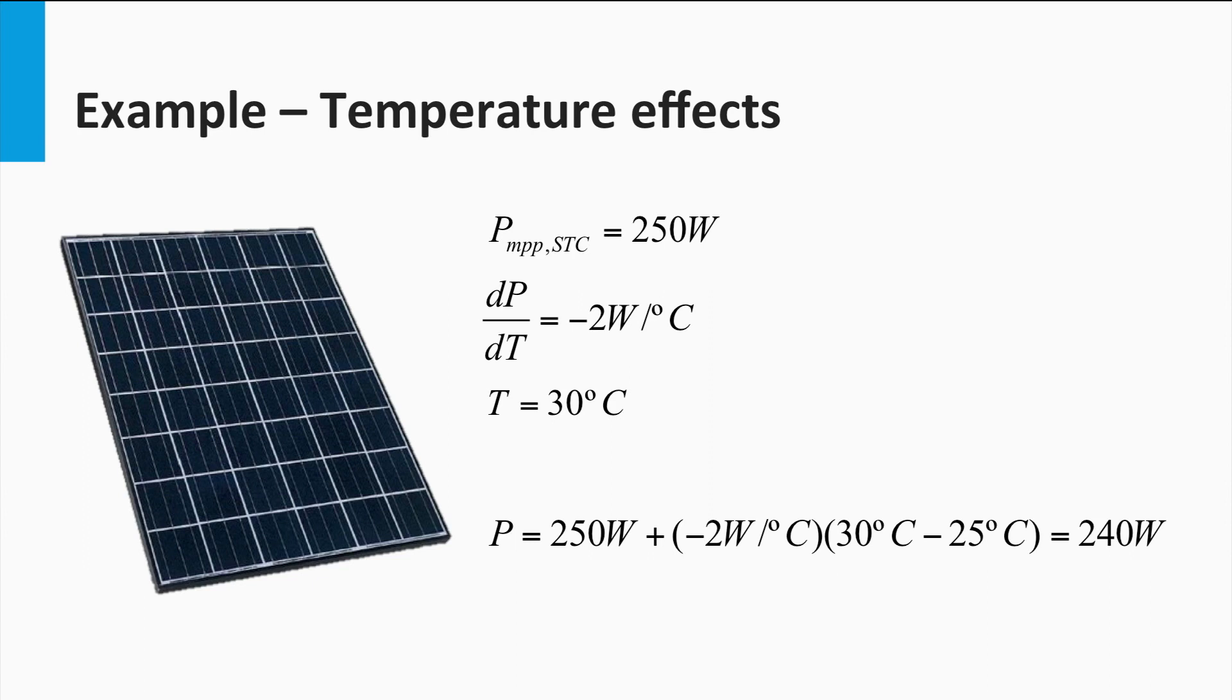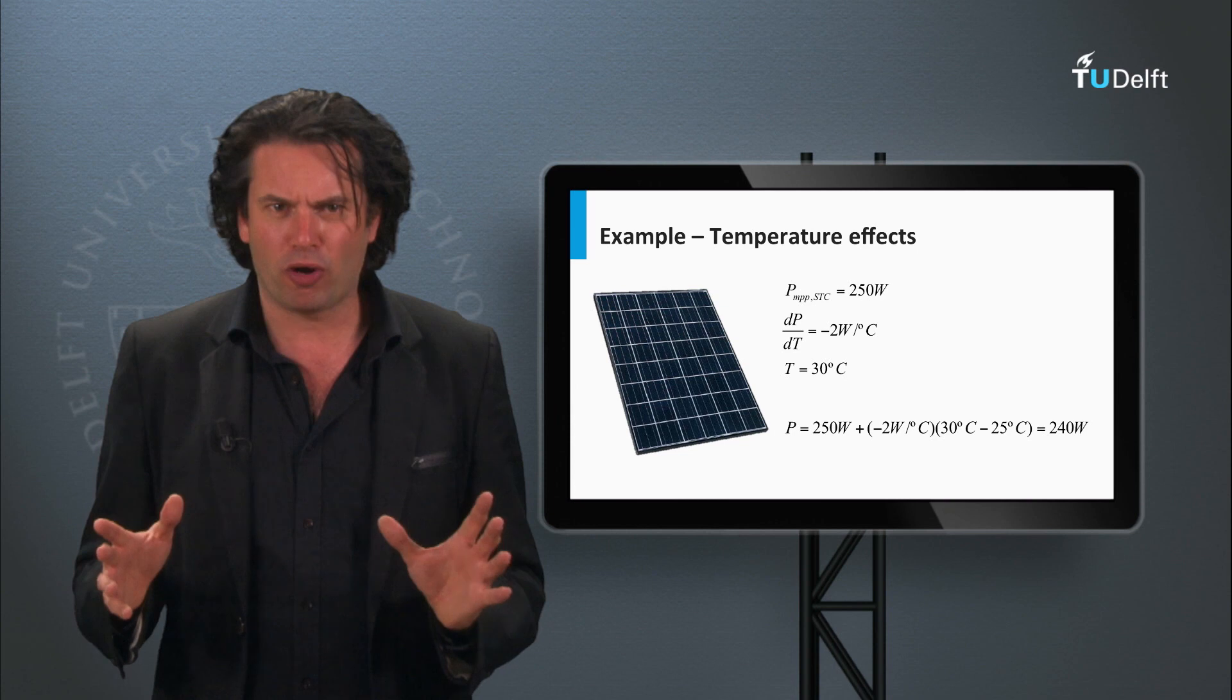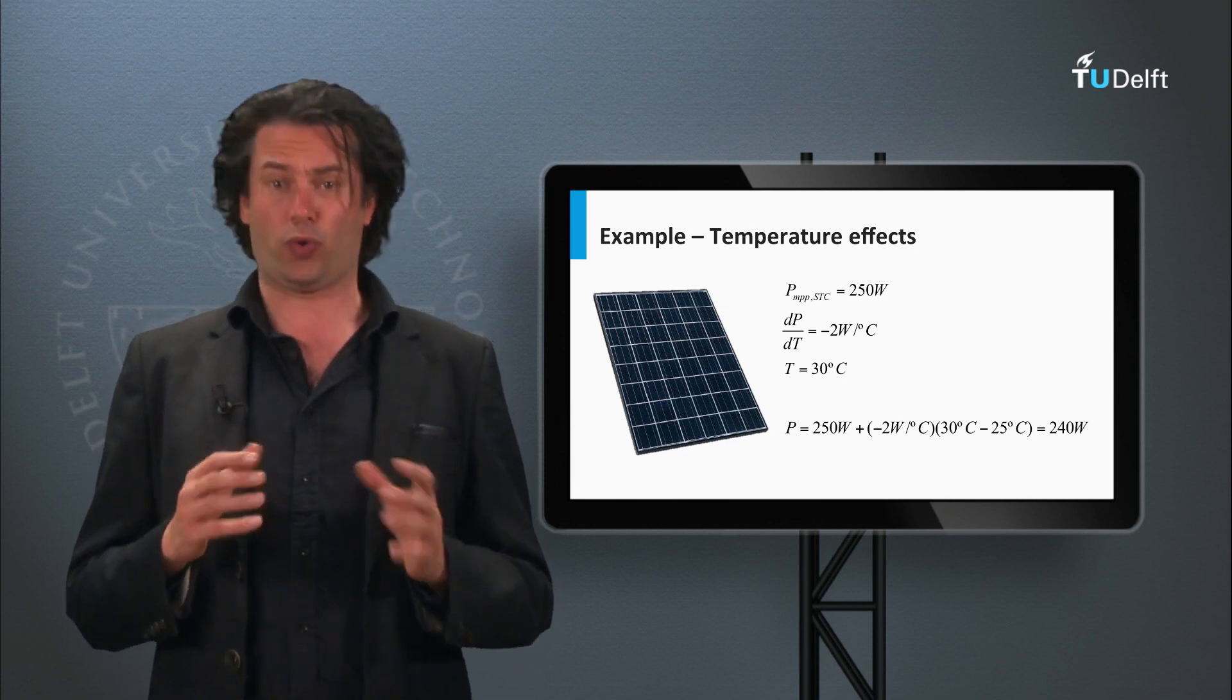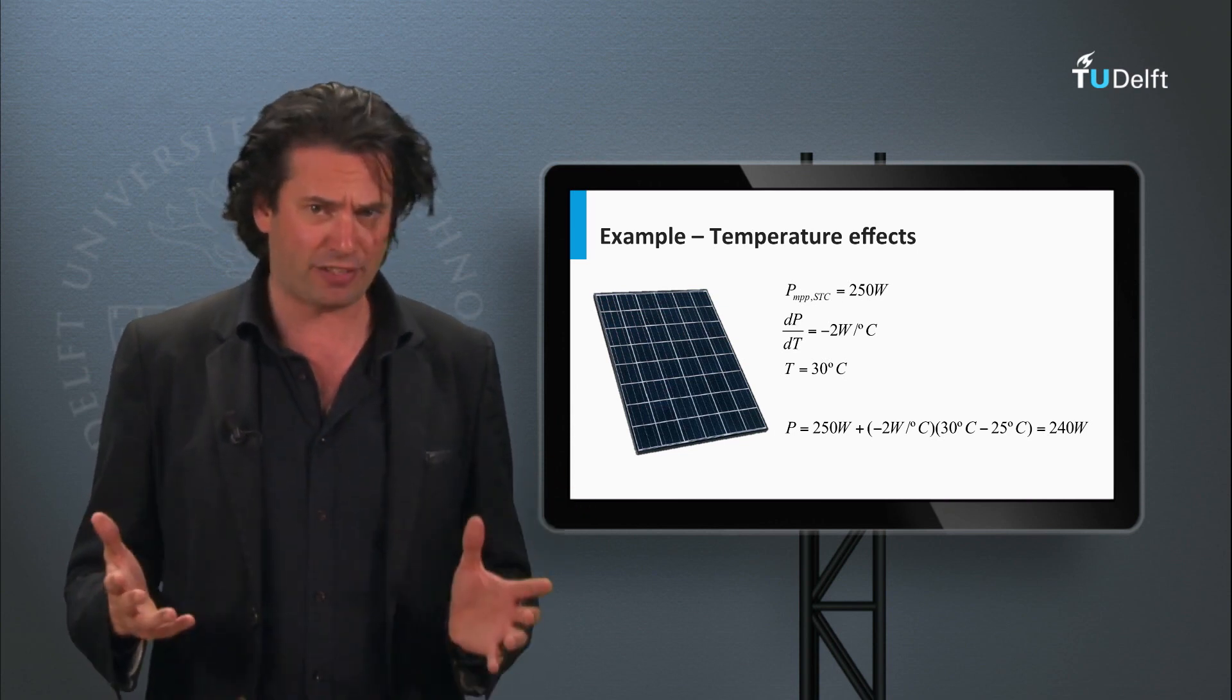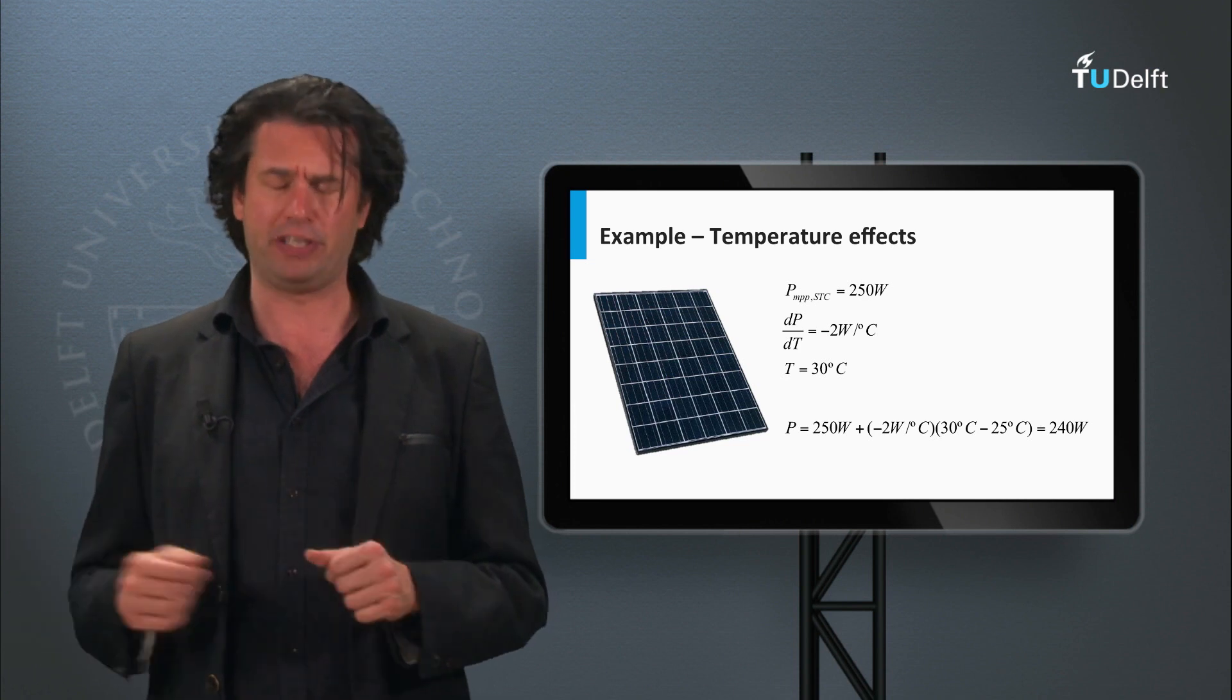As you can see, the sign of the temperature coefficient determines if the parameter is increasing or decreasing with temperature. In the exercises for this block you will be able to use this equation to estimate the effect of temperature on the various PV parameters.